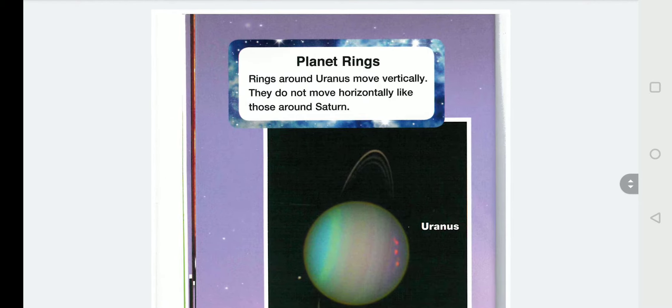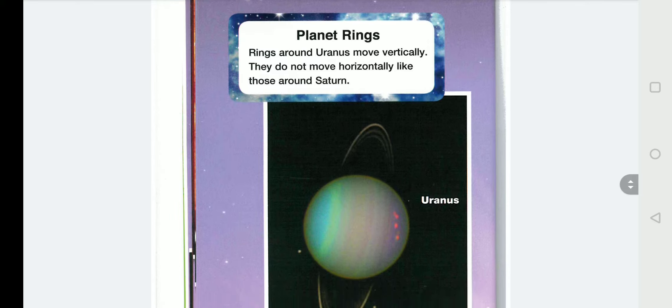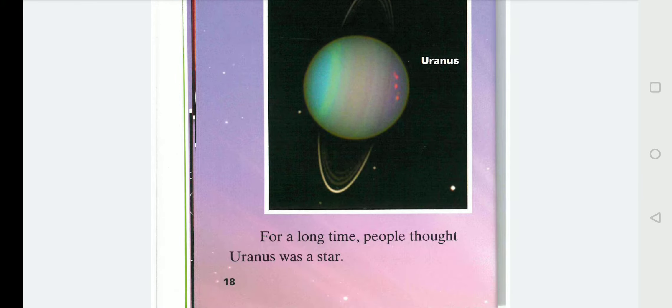Planet rings. Rings around Uranus move vertically. They do not move horizontally like those around the Sun. Vertically means top to bottom and horizontally means left to right. Or right to left. For a long time, people thought Uranus was a star.